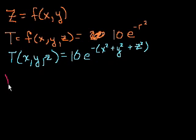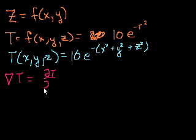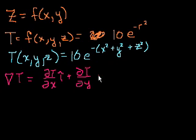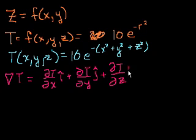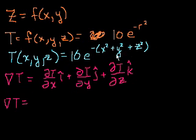The gradient of T is equal to the partial derivative of T with respect to x times the unit vector i, plus the partial derivative with respect to y times the unit vector j, plus the partial derivative with respect to z times the unit vector k. Now we just compute the partial derivatives. You might be daunted by an e to this three-variable function, but remember: when taking the partial derivative with respect to x, you just treat the y's and z's as constants.